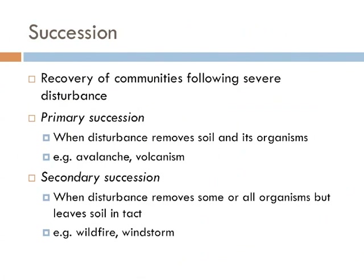Succession is the recovery of communities following a severe disturbance. If the disturbance is so severe that the soil and all the organisms are removed, this is known as primary succession, and it's not very common — examples include volcanism at a large scale and avalanches at a small scale. Secondary succession is way more common, following a disturbance where some or all of the organisms are removed but the soil is more or less left intact. Examples include wildfires, hurricanes, small floods, and drought.